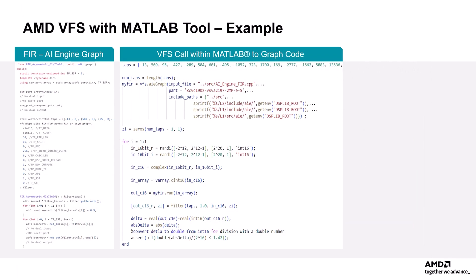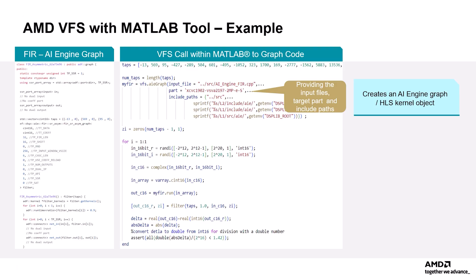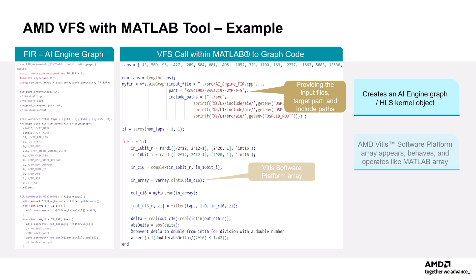An example design with an AI engine graph is shown here, taking an FIR kernel function from the AMD Vitis DSP library. The AMD VFS call using the MATLAB API is shown in the second image. In the above example, myfir = VFS.AIEGraph creates an AIE graph object. Similarly, it can also have HLS kernel functions to create an HLS kernel object for simulating HLS designs. Users can use VArray.datatype to create an input array for the graph or kernel. The Vitis array appears, behaves, and operates just like any other MATLAB array, improving usability for users already familiar with MATLAB syntax.